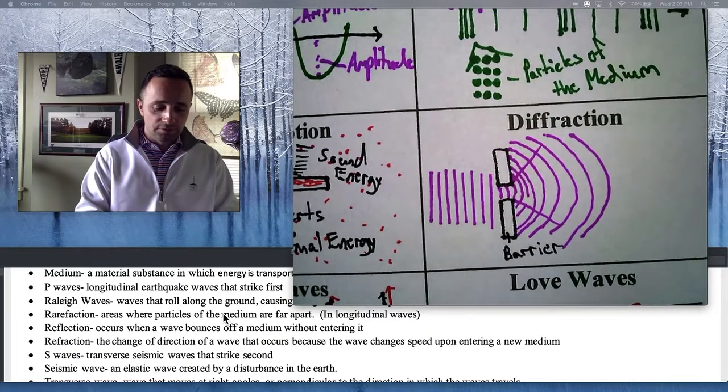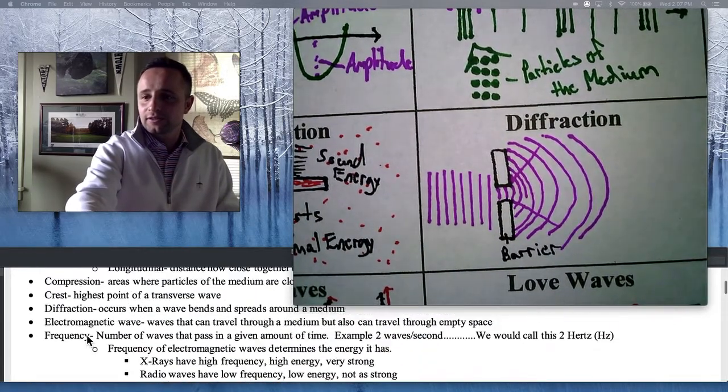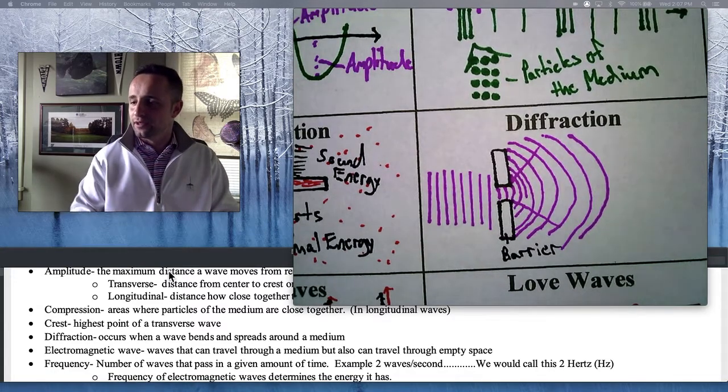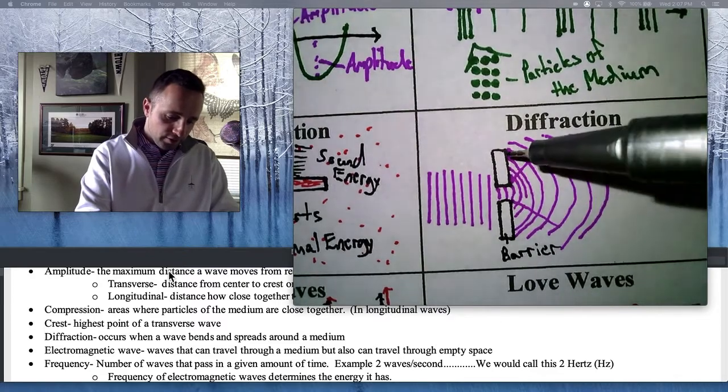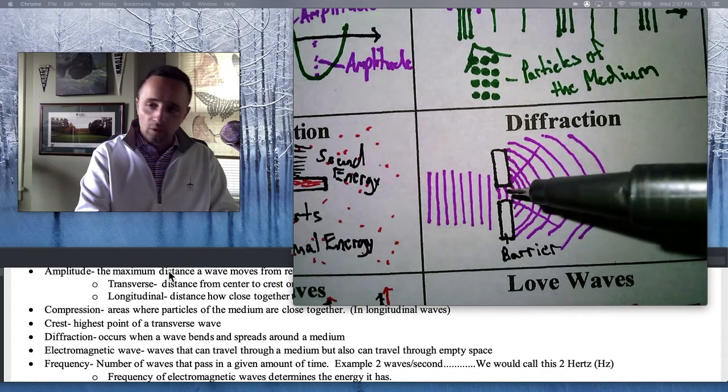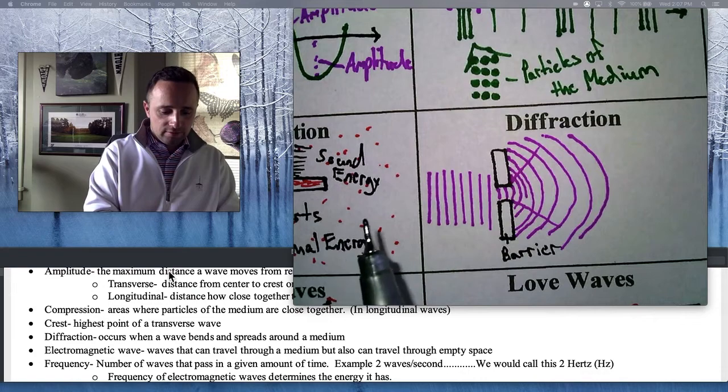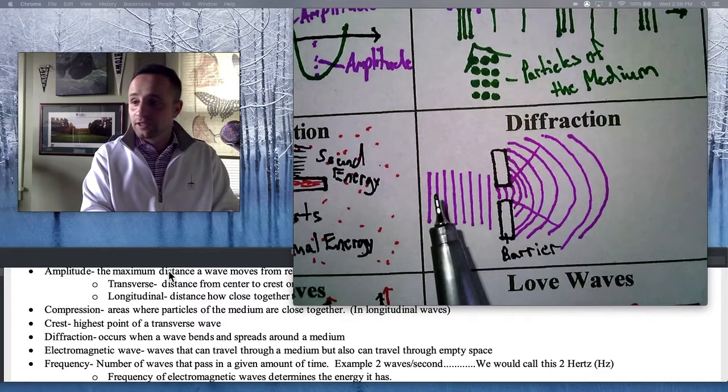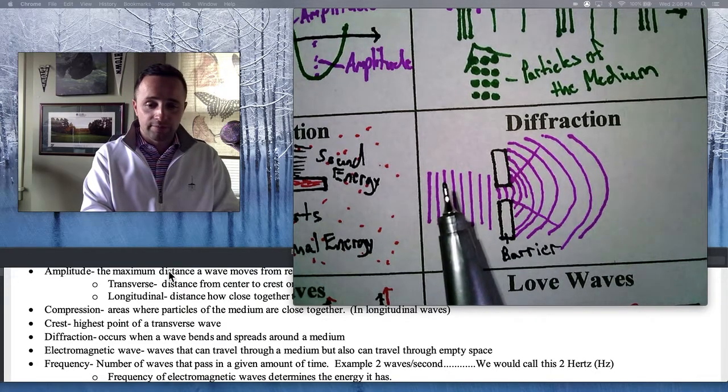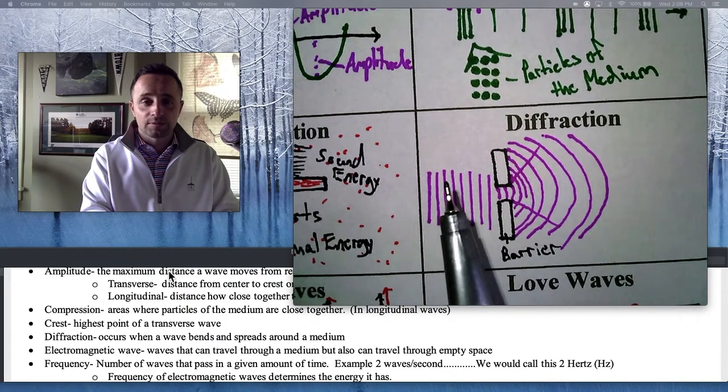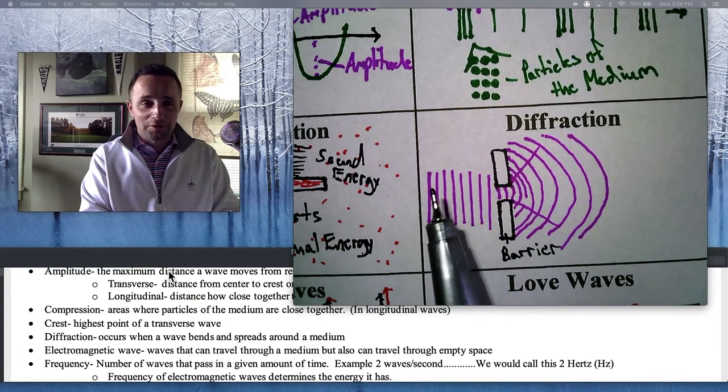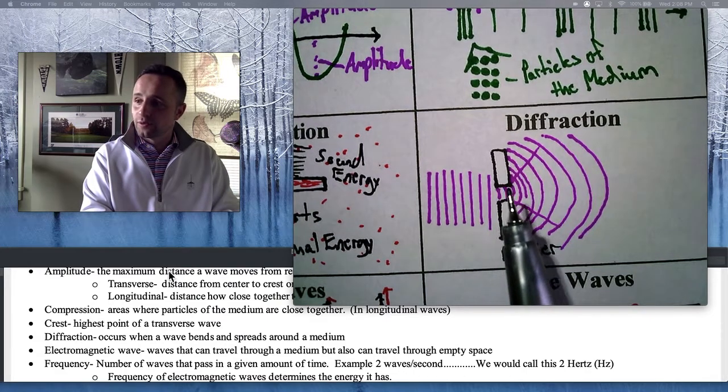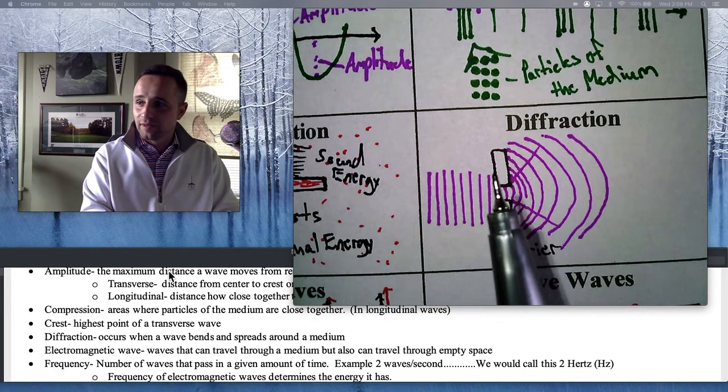Then you have the word diffraction. If you look at diffraction down here, let's see where that is. It says, it occurs when a wave bends and spreads around a medium. So, here's a medium. Like, say here's like a doorway. And, let's just say a student screams at the top of his or her lungs that he or she can't wait for lunchtime, which right now you guys probably are able to choose when you have lunch. Lucky you. But, they yell in this direction. It hits the doorway. When it hits the doorway, it diffracts.